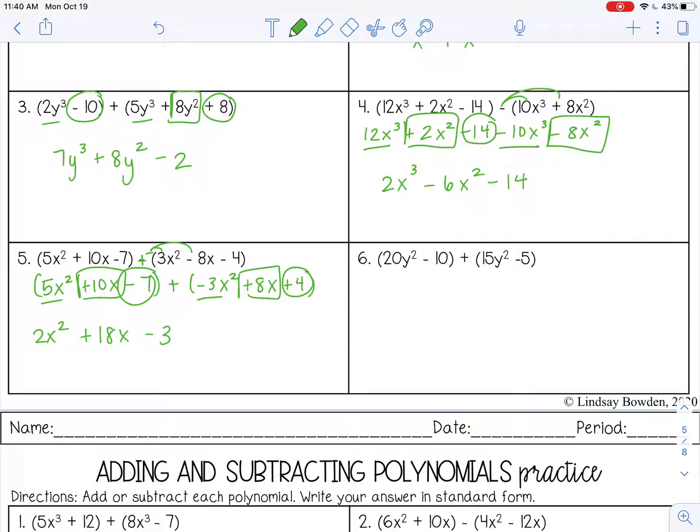And on number 6, I have 20y squared plus 15y squared. That's 35y squared. Then I have negative 10 minus 5. That's negative 15.